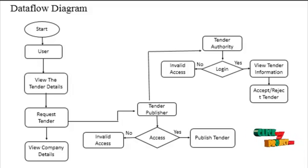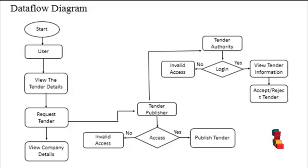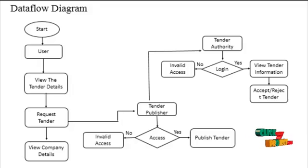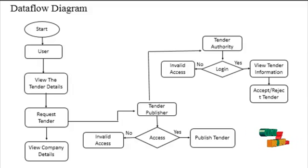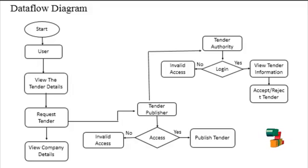The published tender details are directly viewed by the Tender Authority. He or she has the right to accept or reject the tender. The Tender Authority also logs in with their username and password. This model allows the authority to view the tender information and also accept or reject the tender. If the tender is accepted, it goes to tender publishing.